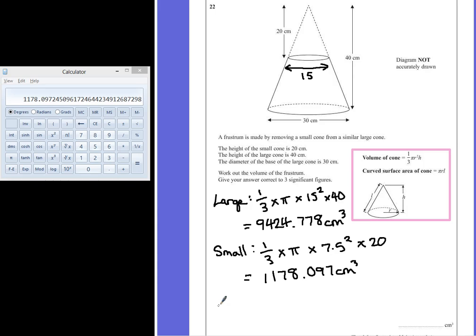To find the volume of the frustum, we just need to take the smaller cone away from the larger cone. So we have 9424.778 take away 1178.097, and we have to do this to three significant figures. 9424.778 subtract 1178.097 equals 8246.681.